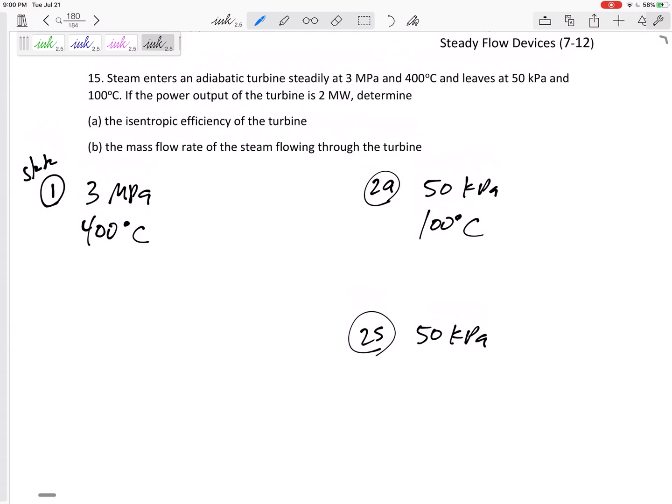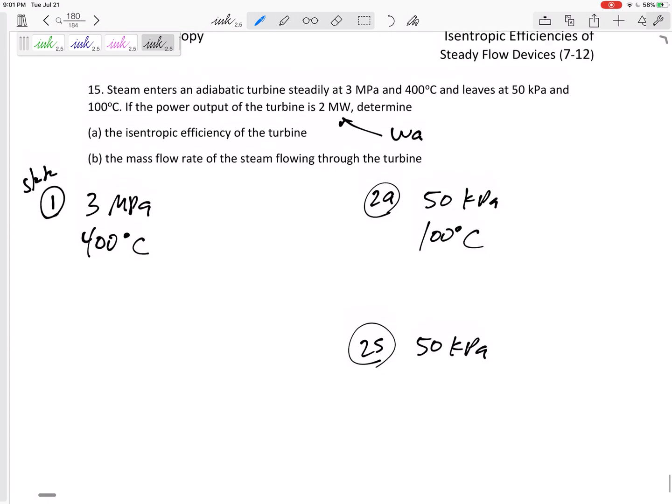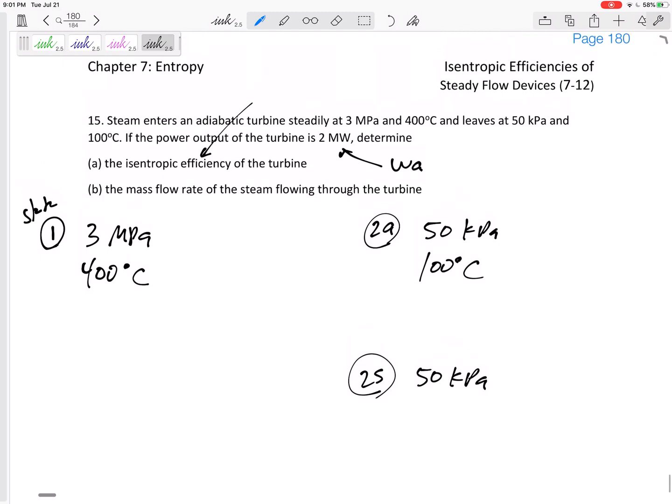The power output of the turbine, so that would be the work actual of the turbine, is two megawatts. I'm gonna do some mental gymnastics - there's so many equations to use. There's not a good step-by-step process for these. I like to do what I can. Isentropic efficiency is h1 minus h2 actual over h1 minus h2s. So finding these h's might be a good start.